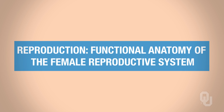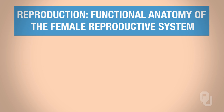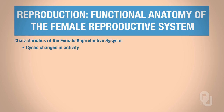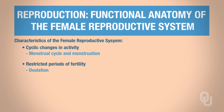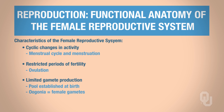In this segment we're going to be discussing the functional anatomy of the female reproductive system. Before we begin the functional anatomy, we're going to look at some characteristics of the female reproductive system. Keep in mind that there are cyclical changes that occur via the menstrual cycle and menstruation. There are periods of restricted fertility, and that is occurring during ovulation. And females have a limited gamete production — females are born with a set number of oogonia.